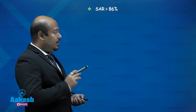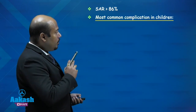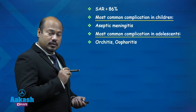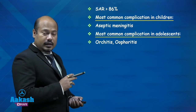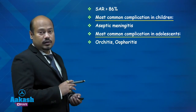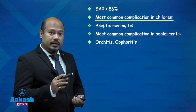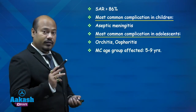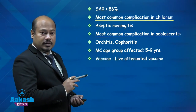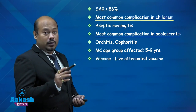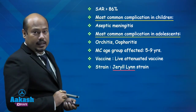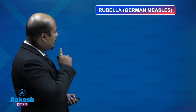The secondary attack rate for mumps is more than 86% (measles was more than 90%). Most common complication in children is aseptic meningitis; in adolescents it can lead to orchitis (inflammation of testes) or oophoritis (inflammation of ovary), though orchitis usually does not lead to infertility. Most common age group affected is five to nine years. The mumps vaccine is a live vaccine; the strain used is the Jeryl Lynn strain. For measles it was Edmonston Zagreb.